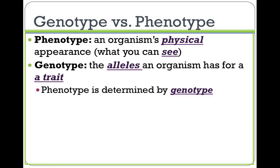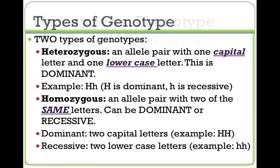Two more terms are phenotype and genotype. The phenotype is just an organism's physical appearance — what you can see. To remember that, just see that 'ph' for physical, 'ph' for phenotype. The genotype, however, is just what the alleles are for a trait for an organism — those two letters that we've been talking about. These are related because phenotype is determined by the genotype of an organism.